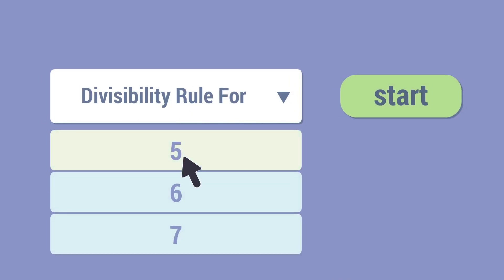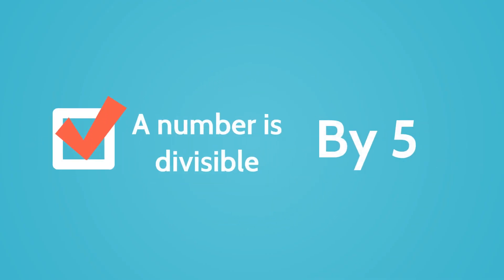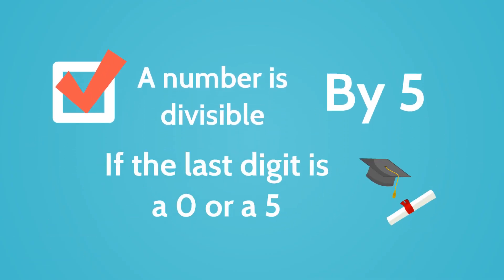Let's now look at the divisibility rule for 5. A number is divisible by 5 if the last digit is a 0 or a 5.